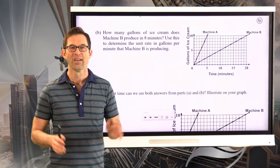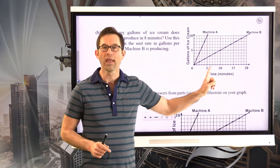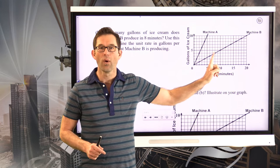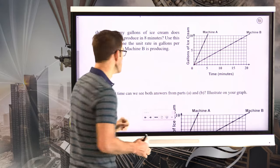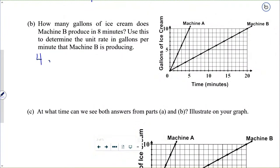All right, let's go through it. So we go out to eight minutes on the x-axis, we go up, and we find four gallons, four gallons of ice cream have been produced. So that's the initial answer, four gallons, and we want to change that into a rate so we first set up this ratio, four gallons to eight minutes.